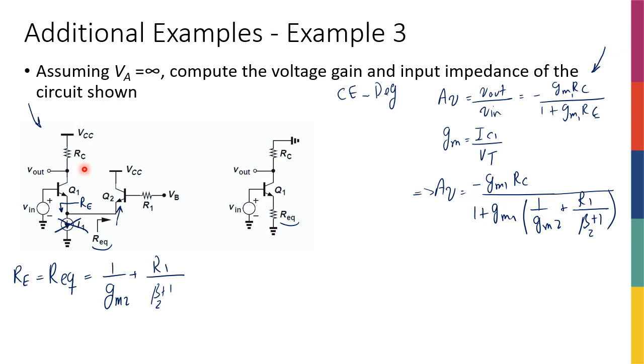So I use two tricks. Number one, I saw this circuit as a common emitter with degeneration. Number two, I know that the resistor looking into the emitter is 1 over GM plus the base resistance divided by beta plus 1. I only use these two tricks to find the gain. That's it. I didn't do like this. These are the two tricks that I used to simplify the circuit in hand, which is this guy, to a circuit that I know its gain. And then from there everything was pretty simple.